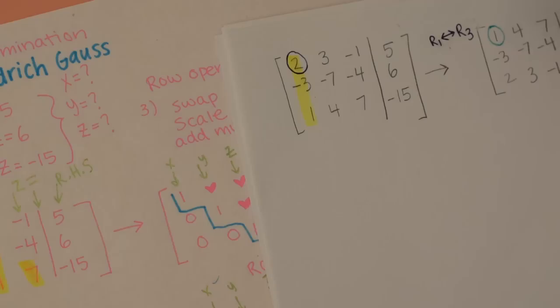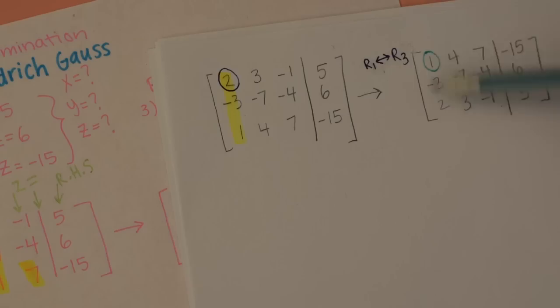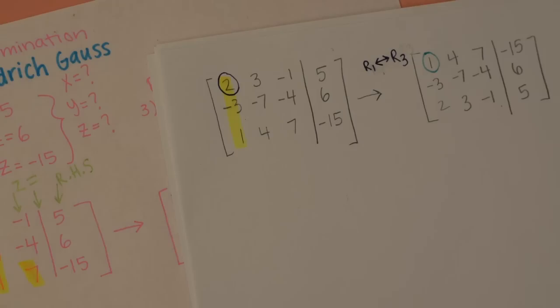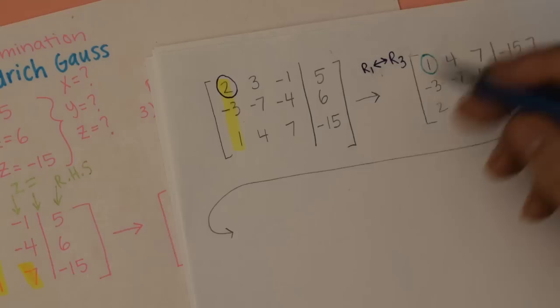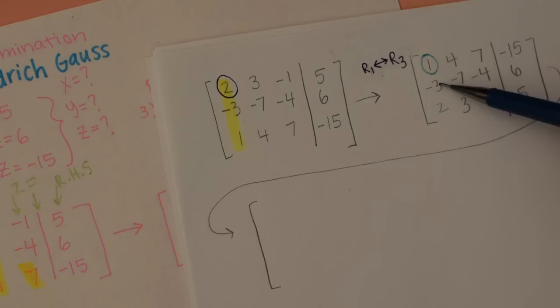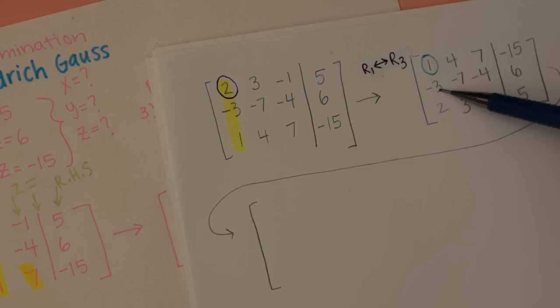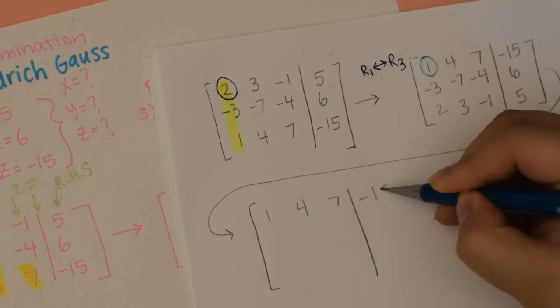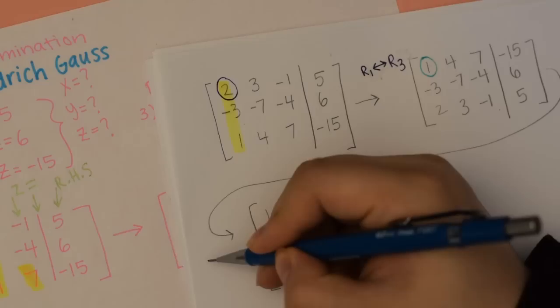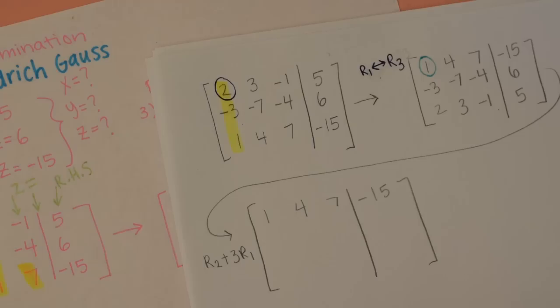Like we said for Gaussian elimination, first get that first column to be a 1. And now, with that 1, I can look at the two below it and try to get those to be zeros. I can do this one at a time. So this is one row operation. The next one is going to be: to get this to be zero, I'm going to do this row plus 3 times that one, because negative 3 plus 3 is zero. So for the next row, I am going to do row 2 plus 3 times row 1.